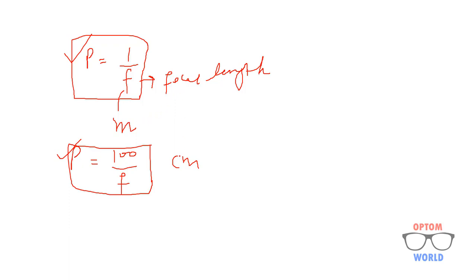So let's suppose we have a convex lens with a focal length of 2 meters and we want to calculate its power. So focal length is in meters, so we will use p is equal to 1 by f.